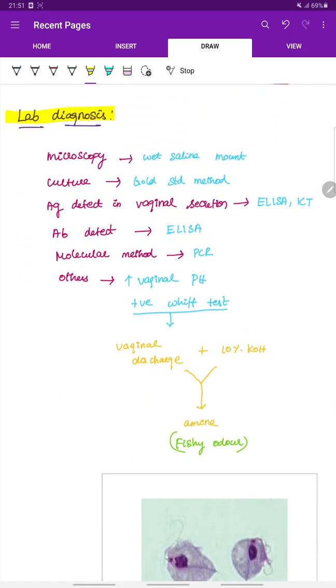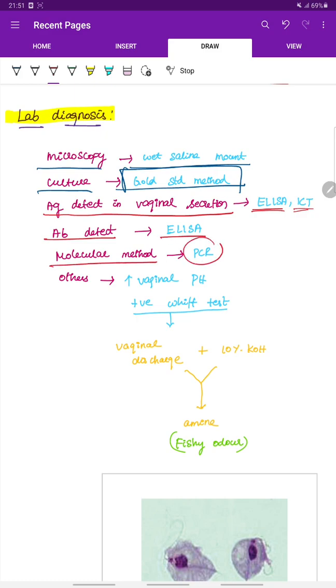Lab diagnosis of Trichomonas vaginalis. Microscopy under wet saline mount, trophozoids are demonstrated. Culture is the gold standard method for lab diagnosis. Antigen detection in vaginal secretion using ELISA or immunochromatographic test. Antibody detection using ELISA. Molecular method like PCR.